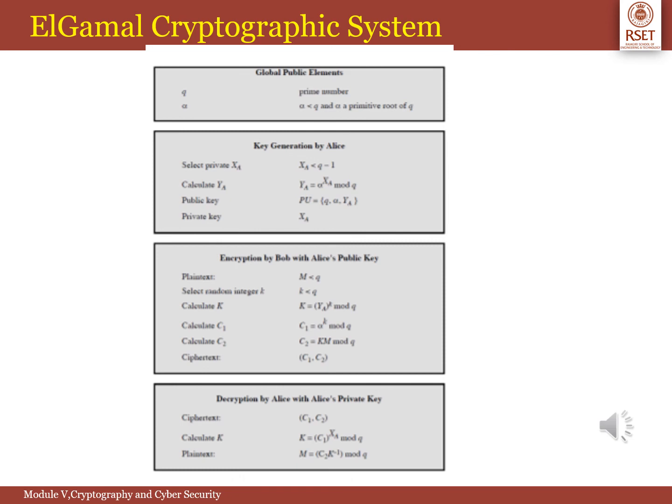Any user B that has access to A's public key can encrypt a message as follows. The message is represented as integer M. Choose a random integer k such that k lies between 1 and Q minus 1. Compute a one-time key K equal to YA raised to k mod Q. Encrypt the message M as a pair of integers C1 and C2, where C1 is equal to alpha raised to k mod Q and C2 is equal to K times M mod Q. User A recovers the plaintext by computing K equal to C1 raised to XA mod Q, then computing M equal to C2 times K-inverse mod Q.